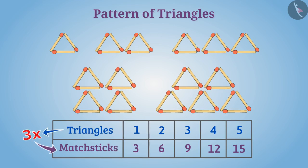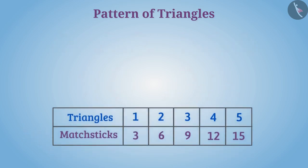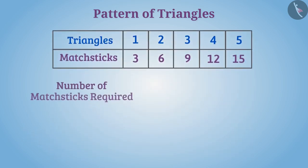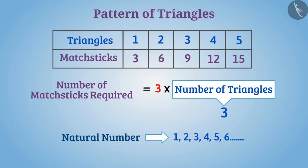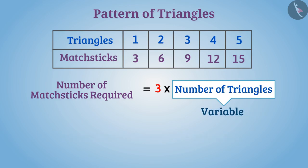With this understanding, the rule for the pattern of triangles can be given as: number of matchsticks required is equal to three multiplied by number of triangles. Here the number of triangles can be one, two, three, or any natural number. It means the value of number of triangles is not fixed. It can change, that is, it can vary. Such a number whose value is not fixed or steady is called a variable.